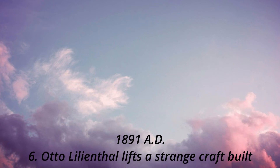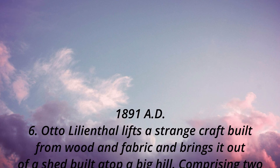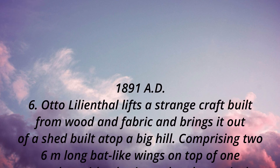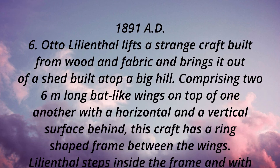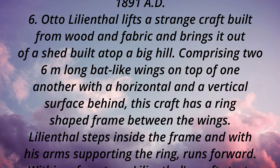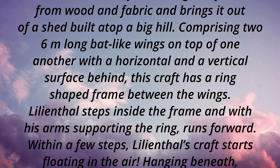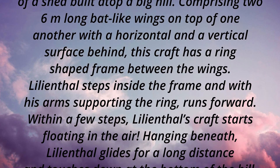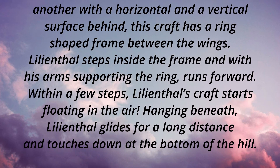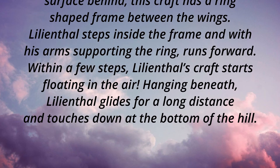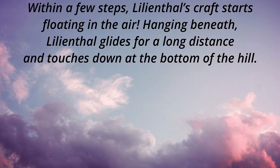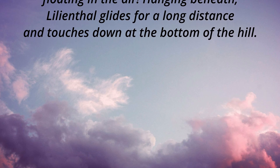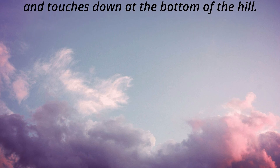1891 AD: Otto Lilienthal lifts a strange craft built from wood and fabric out of a shed built atop a big hill. It comprises two six-meter-long bat-like wings on top of one another, with a horizontal and vertical surface behind. The craft has a ring-shaped frame between the wings. Lilienthal steps inside the frame and, with his arms supporting the ring, runs forward. Within a few steps, Lilienthal's craft starts floating in the air. Hanging beneath it, Lilienthal glides for a long distance and touches down at the bottom of the hill.